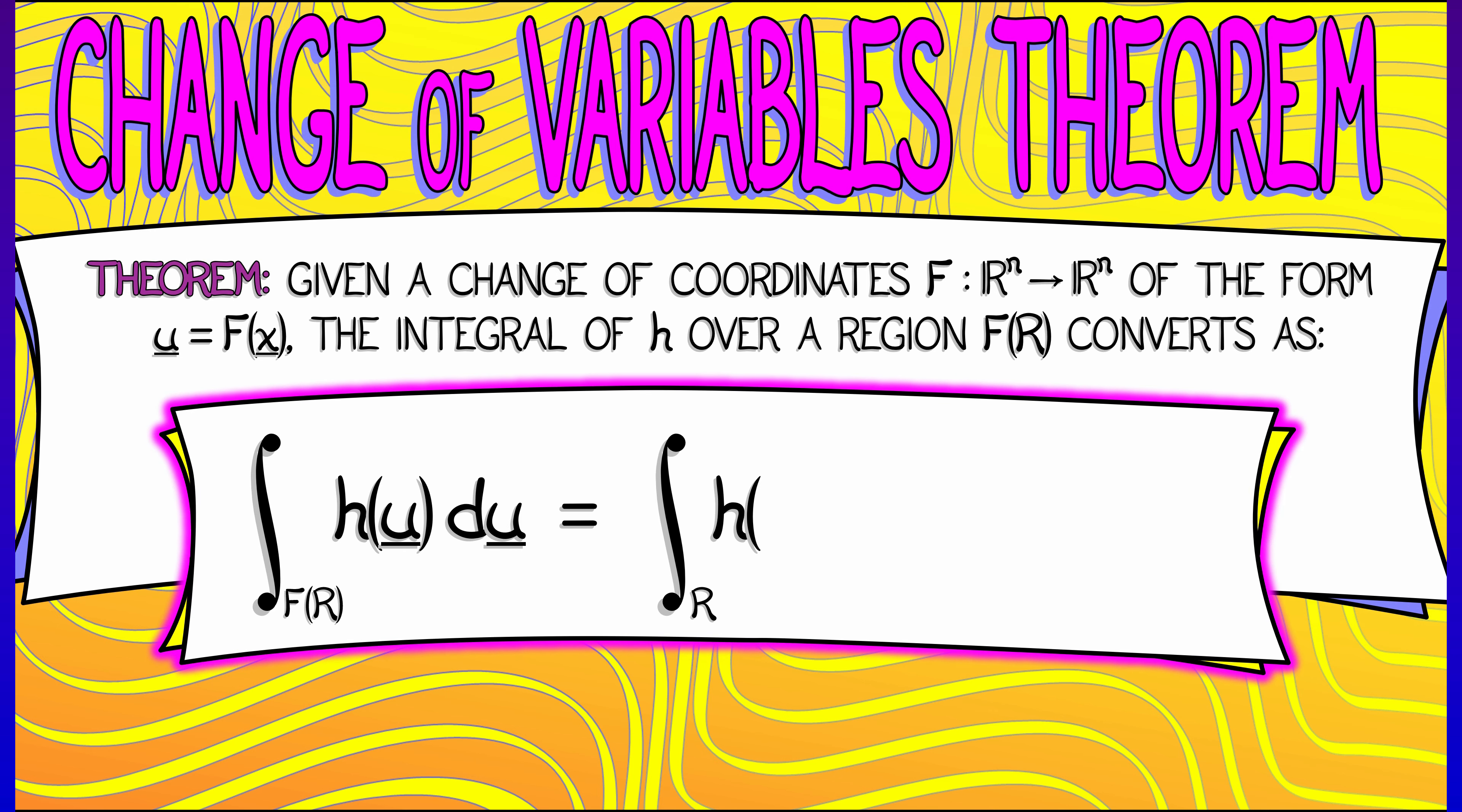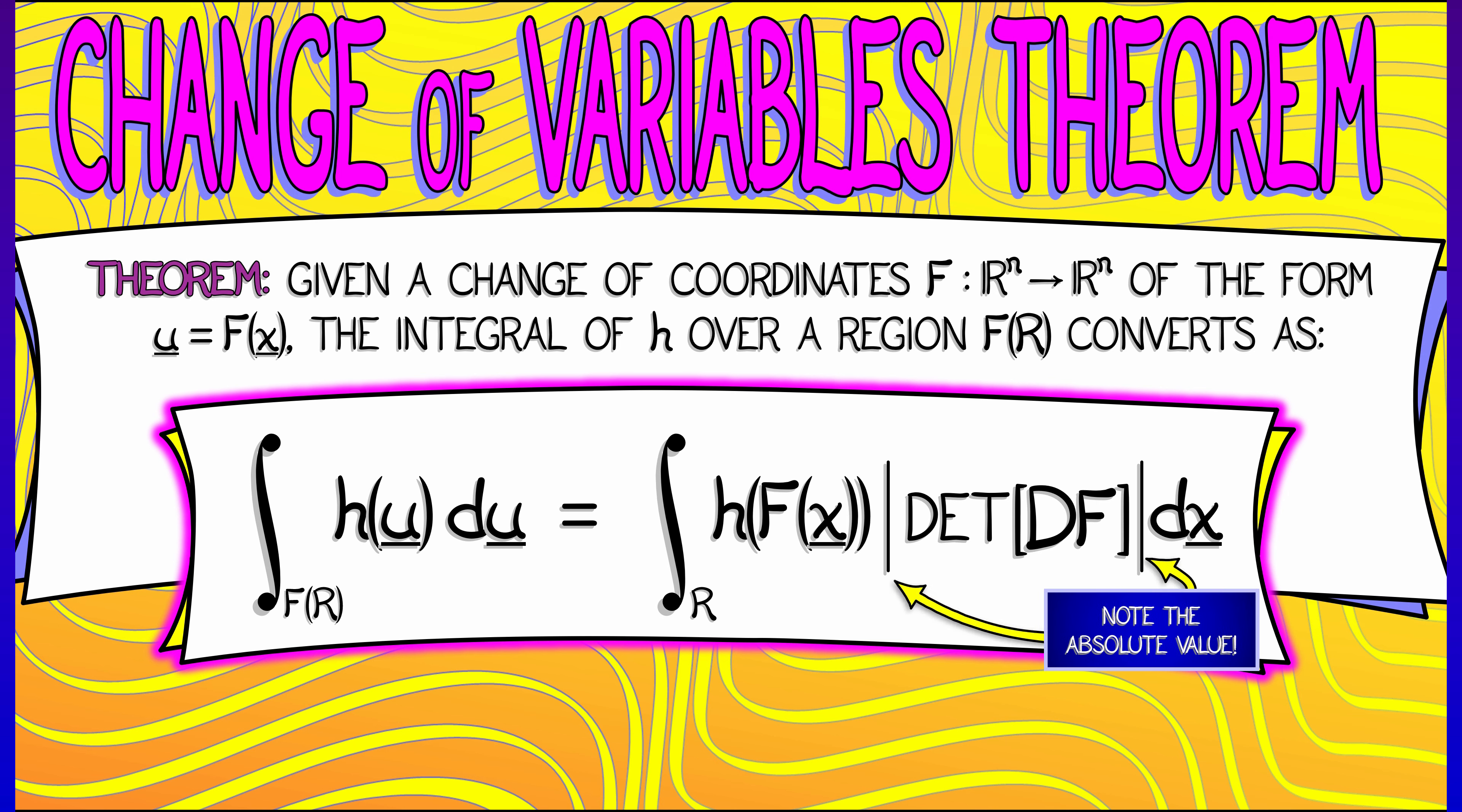If I look at the integral of h of u du over f of r, where r is some region in x coordinates, then this integral is the integral over r of h of f of x times the absolute value of the determinant of df times dx.